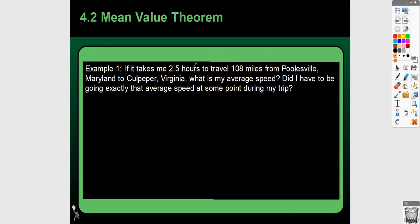So we've looked at this example before. This was way back in chapter 2. If it takes 2.5 hours to go 108 miles from Poolsville to Culpeper, Virginia, what is the average speed? To get average speed, you are going to do the total distance that you went divided by how long it took. You can plug that into the calculator and figure out the decimal. That is going to be your average speed, and that would be miles per hour.